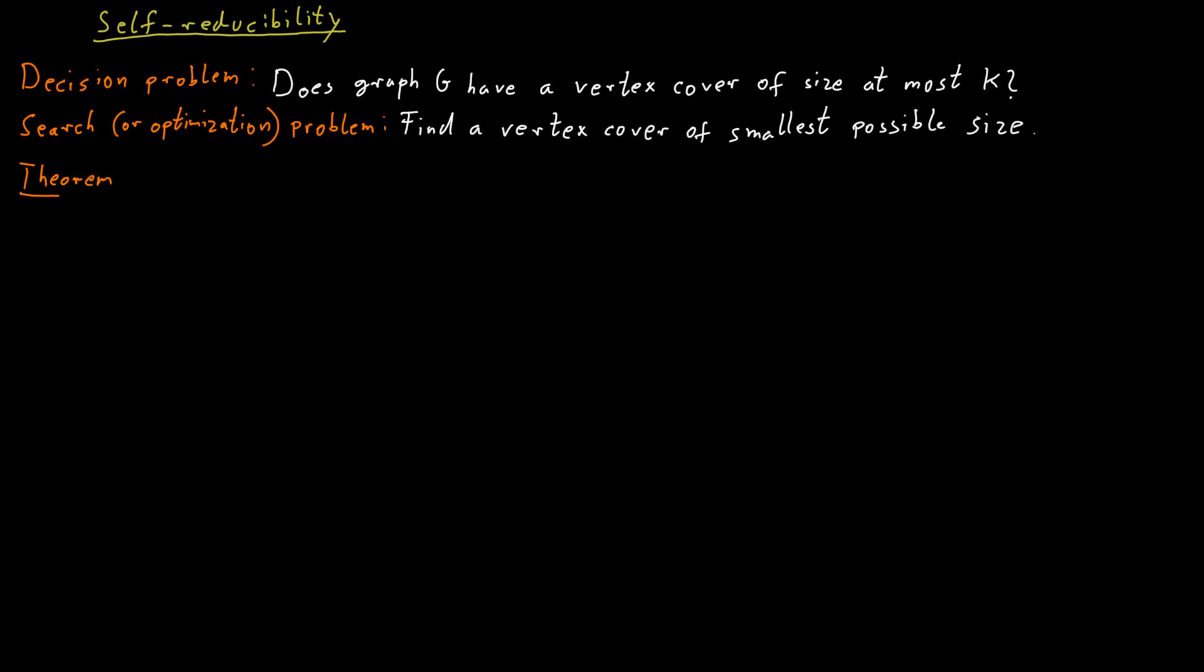Let's look at a specific example. Let's take vertex cover. I claim that if I have an algorithm that can decide whether a vertex cover of size at most k exists, I can use this to build an algorithm that finds the minimum cardinality vertex cover of a graph and does so efficiently. So the first step is to find out what the size of the minimum vertex cover is. What is the cardinality of the minimum vertex cover?